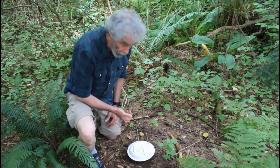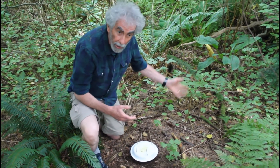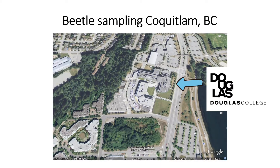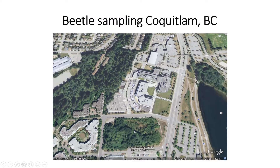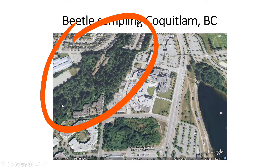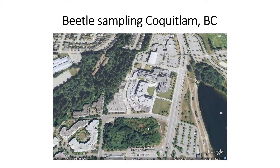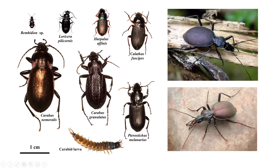We don't use a killing fluid in our traps — we do them live, then we can identify, count, and release the beetles on site without killing any. Here's an aerial view of the Coquitlam campus of Douglas College. There are two areas we've used over the years for sampling ground beetles with pitfall traps. One is part of the Hoy Creek watershed, where Hoy Creek runs by the campus in an area dominated by coastal temperate rainforest. South of the campus is a lighter green area — a meadow that's the remnant of a former gravel pit and a variety of other human-related disturbances.